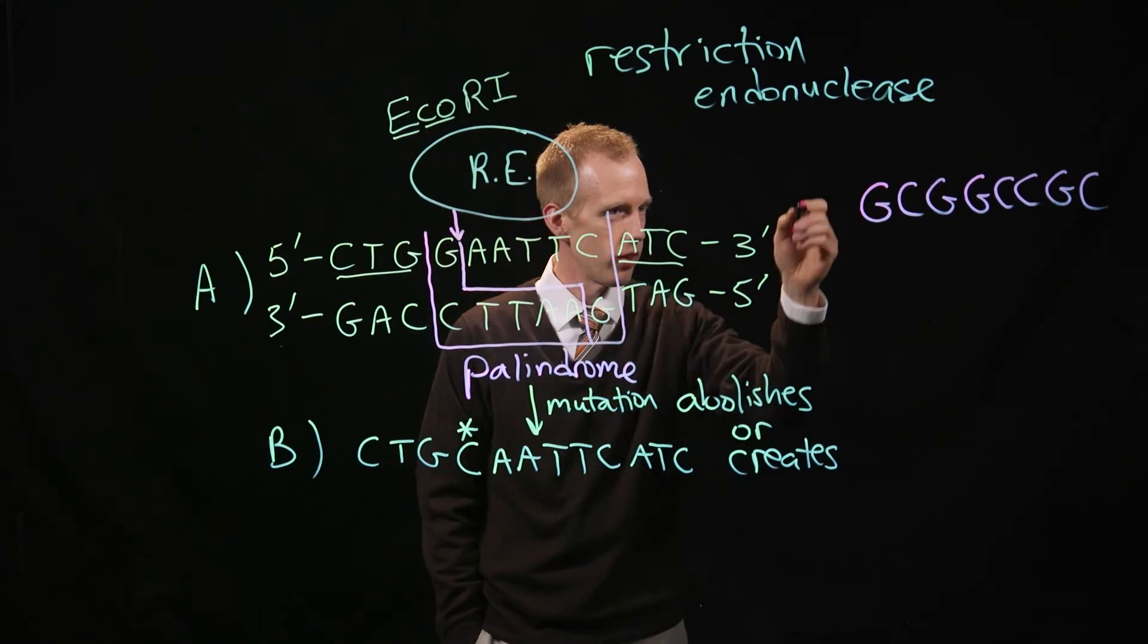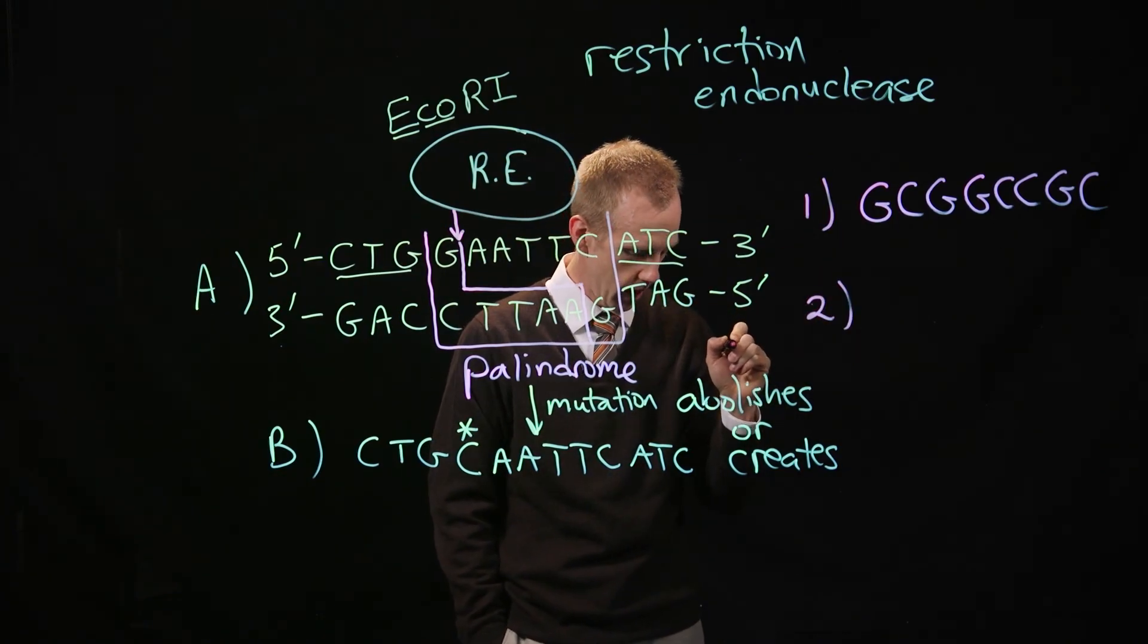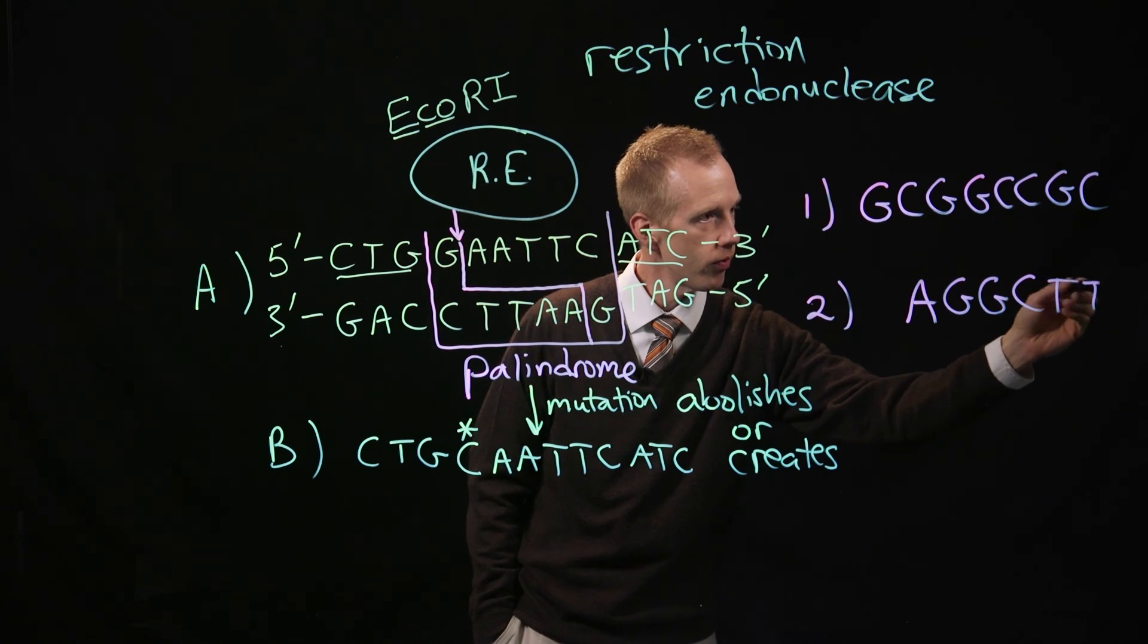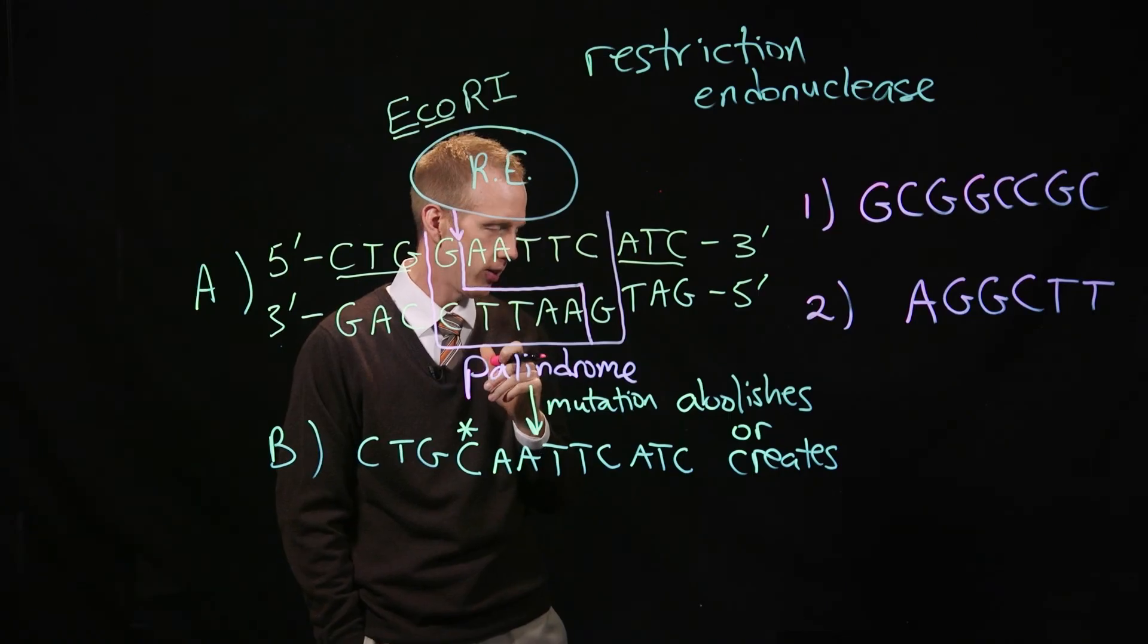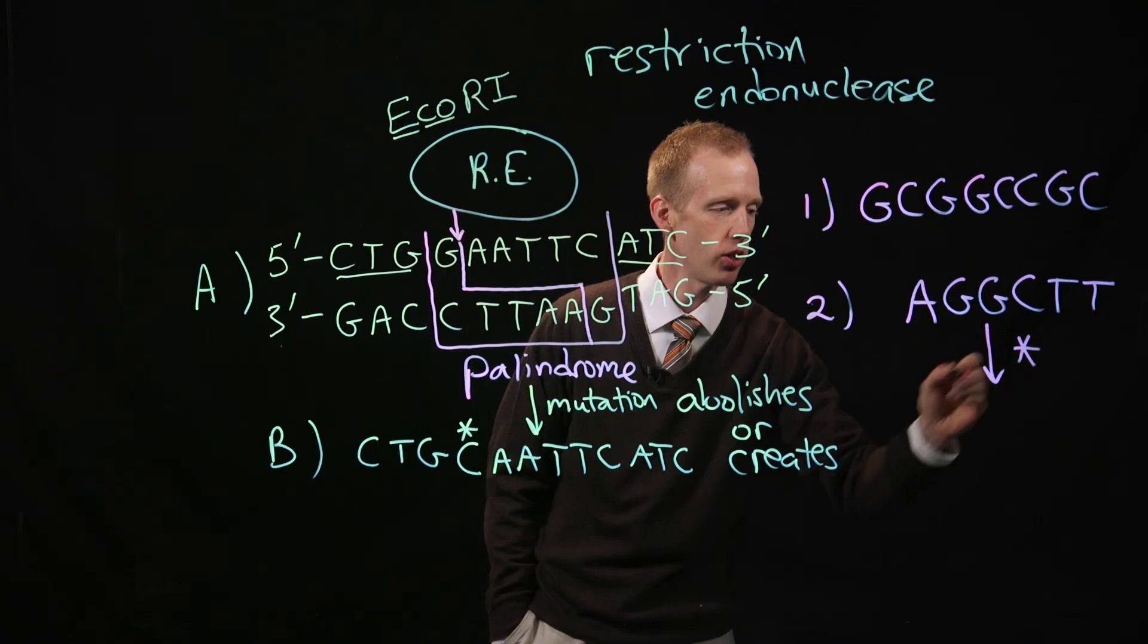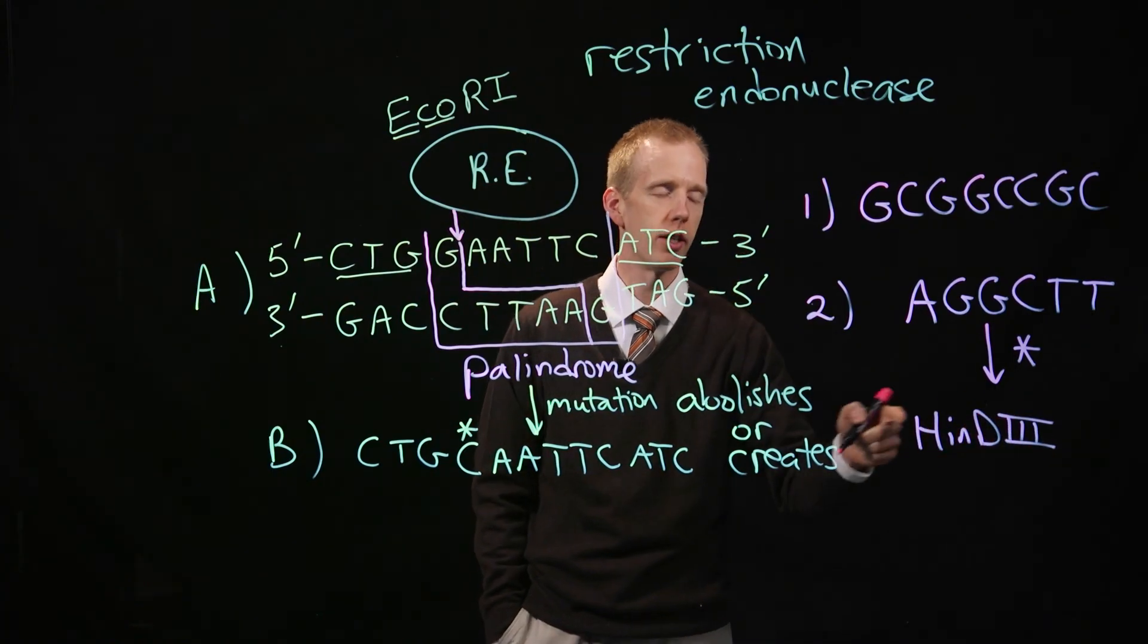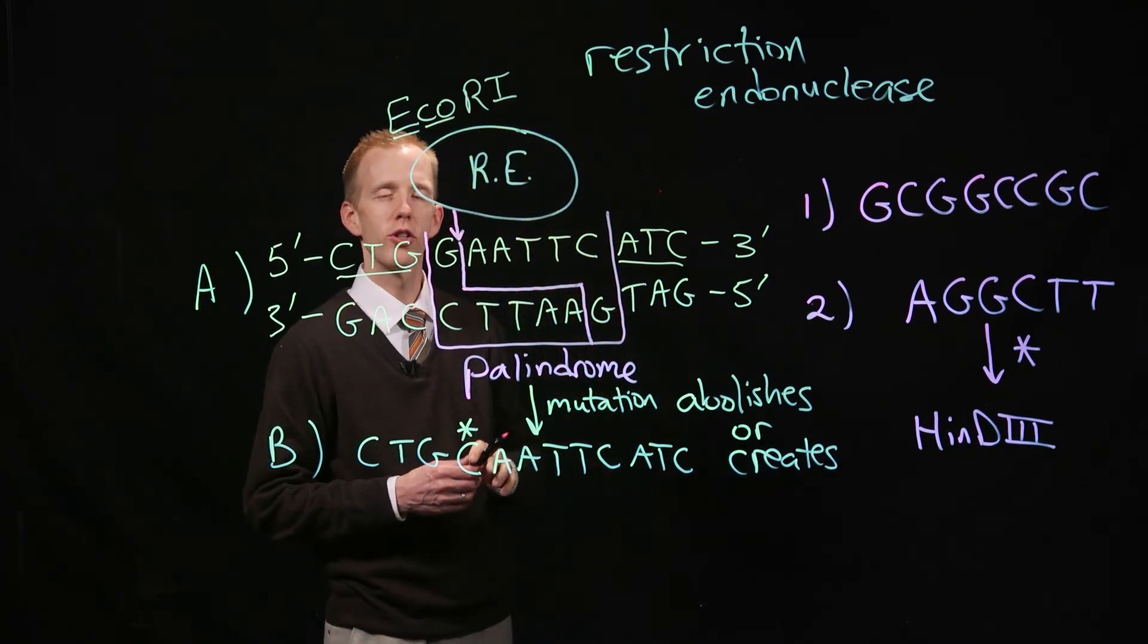The second question for you to think about and bring answers to the next class is, here's a DNA sequence. What mutation to that sequence would make a sequence that can be digested by the enzyme HindIII? That's from Haemophilus influenzae, the D3 version of that enzyme. Think about those two questions for next class.